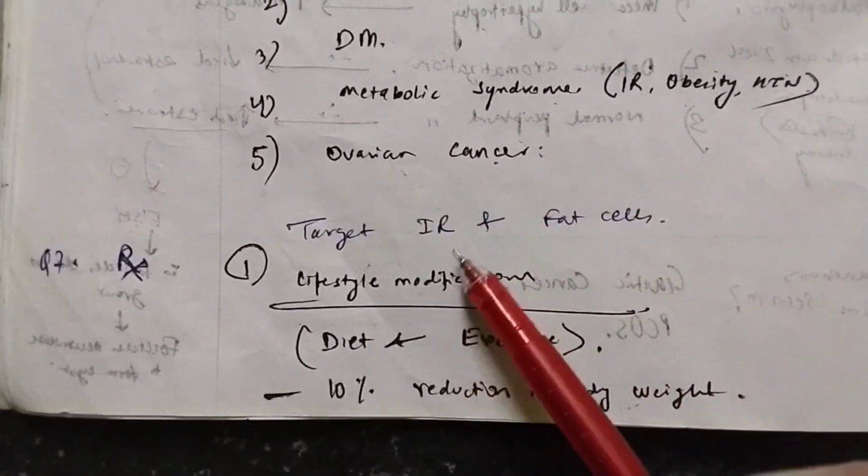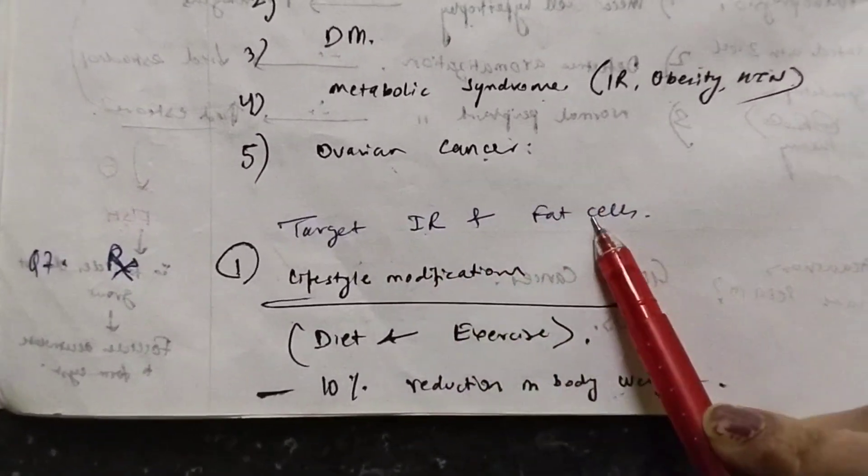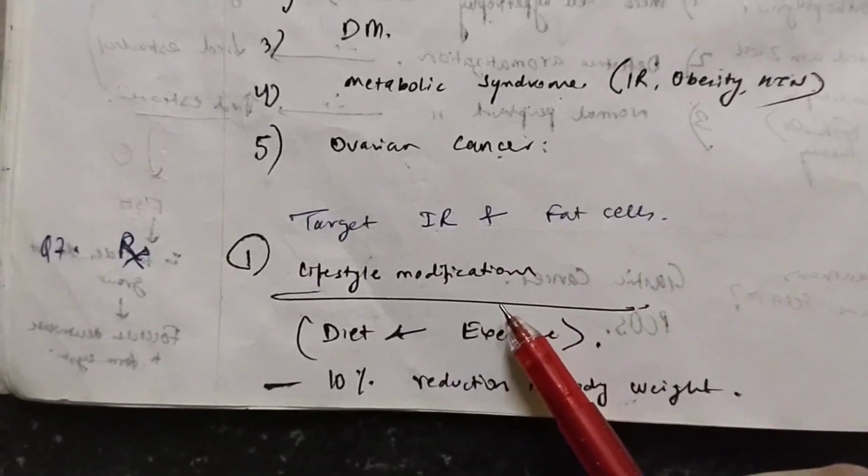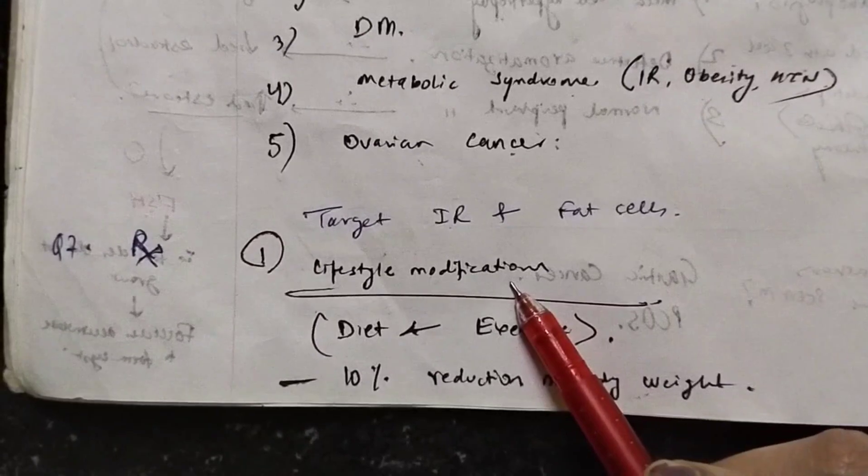So for treating PCOD, our target should be to target the insulin receptors and target the fat cells. First we have non-pharmacological management and then we proceed to the pharmacological management.